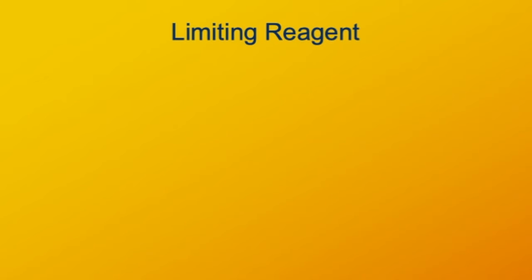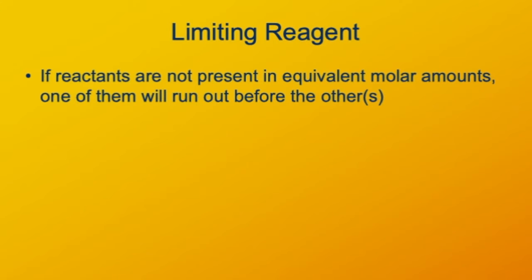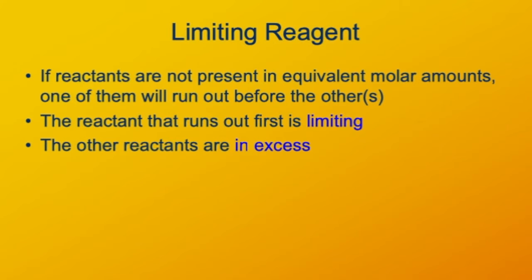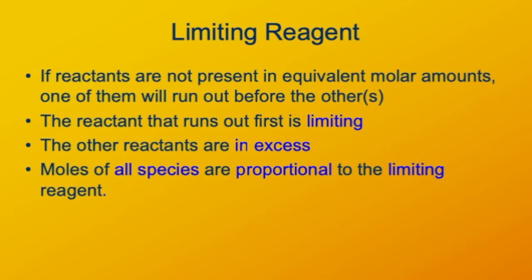We can also be interested in the limiting reagents in reactions. This happens when reactants are not present in equivalent molar amounts. When that happens, one of them is going to run out before the other one does — that's the limiting reagent. The reagents still present when the limiting reagent is consumed are the excess reagents. The amount of excess reagents consumed and the moles of product created are proportional to the moles of limiting reagent. However much excess reagent you have doesn't matter; if you don't have a limiting reagent, you're not going to produce the product.